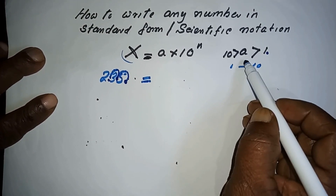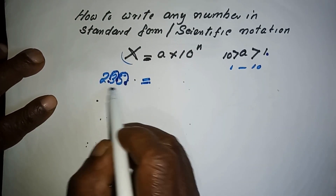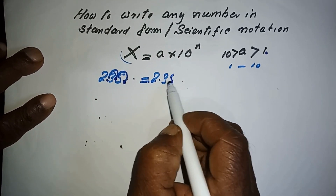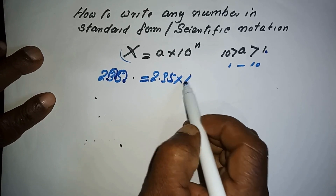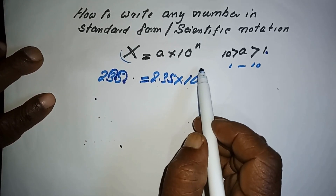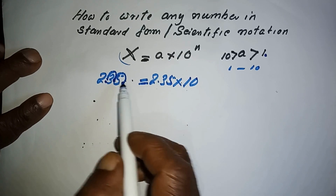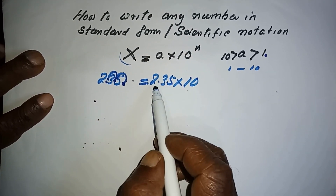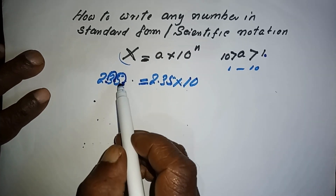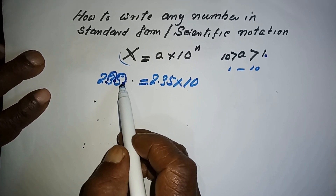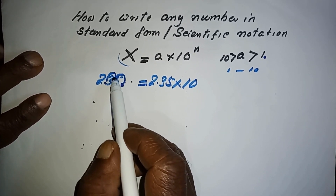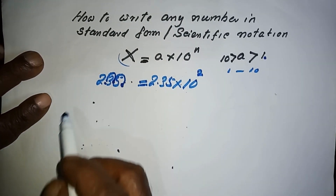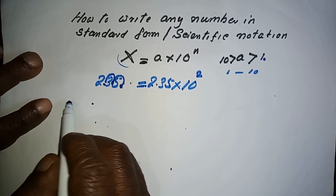2.35 is greater than 1 and less than 10, so we write 235 as 2.35 times a power of 10. To find the index, we count how many times we shifted the decimal place. To change 235 to a number between 1 and 10, we shifted the decimal 2 times backward, so the index is 2.